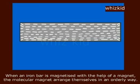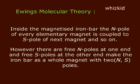When an iron bar is magnetized with the help of a magnet, the molecular magnets arrange themselves in an orderly way. Inside the magnetized iron bar, the north pole of every elementary magnet is coupled to the south pole of the next magnet, and so on.